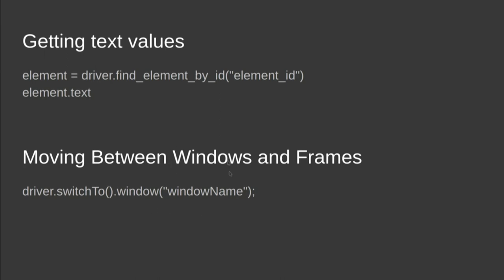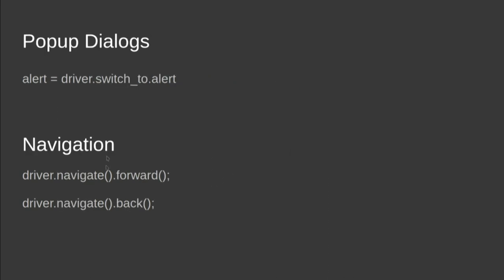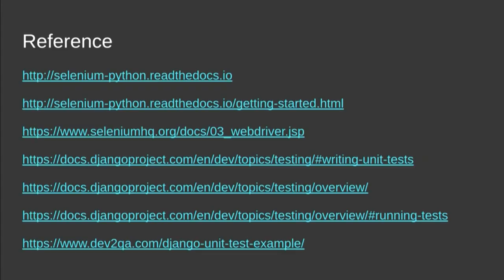For switching from one window to another there is the switch_to function. Selenium can also handle alert boxes that pop up, navigate back to the previous page, go forward, and do everything a user can do in a browser. The slides with all references and examples will be shared — you can try them out yourself for a better hands-on experience. Thank you.